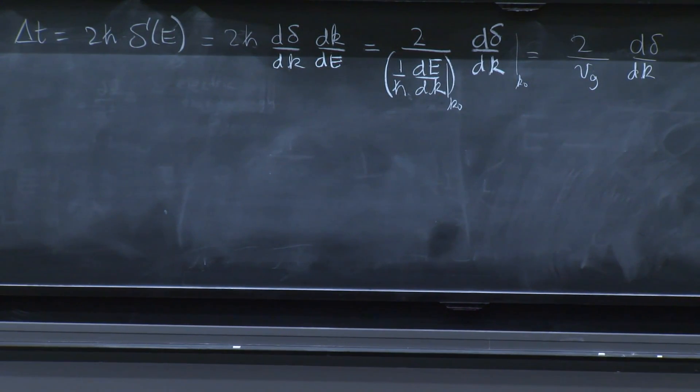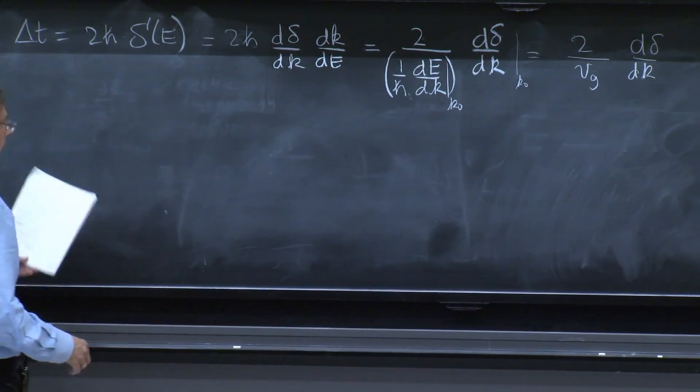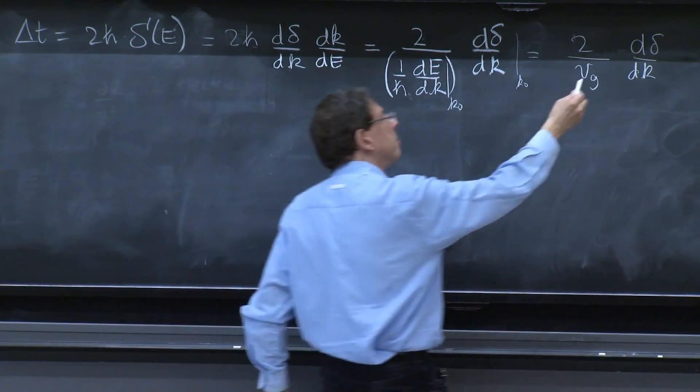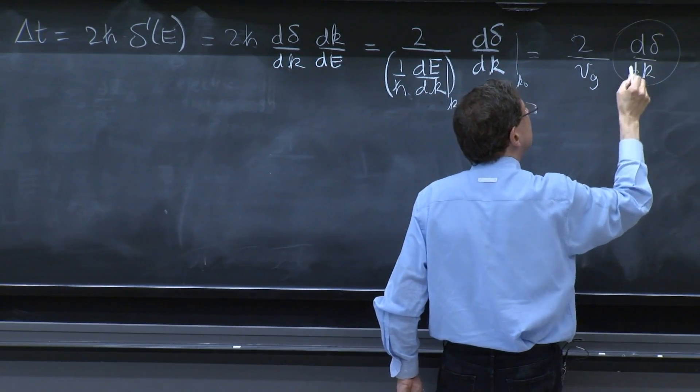So this is the group velocity d delta dk. And finally, let me rewrite it in a slightly different way. I multiply by 1 over r. Why? Because d delta dk, k has units of 1 over length.